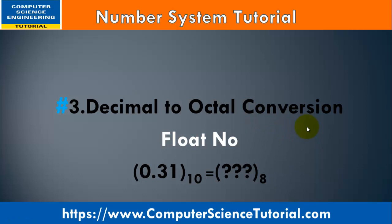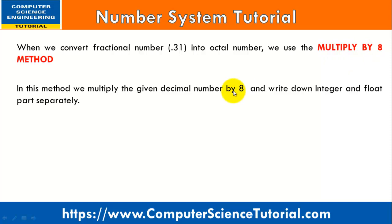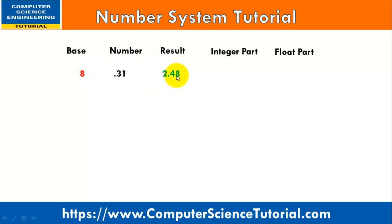Now I will explain how to convert a floating point number into octal. In this example I have taken the decimal number 0.31. The conversion process for floating point numbers is a little different from normal numbers. Instead of division, we use the multiplication method — we multiply the given decimal number by 8. Our base is 8 and our number is 0.31; when I multiply 0.31 by 8 I obtain 2.48.